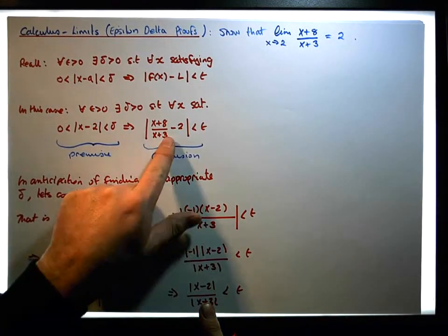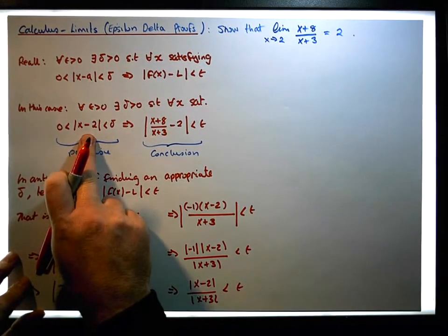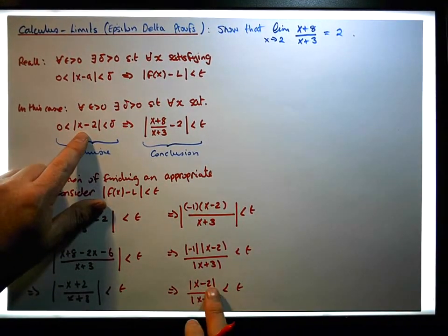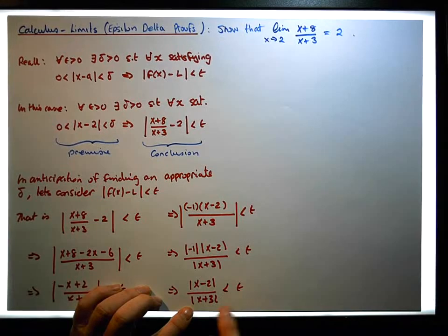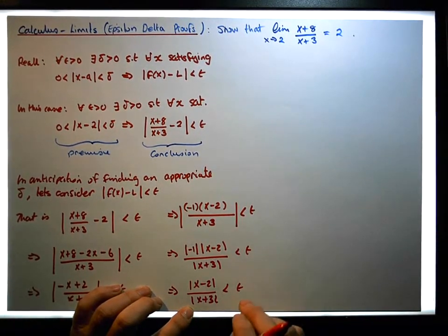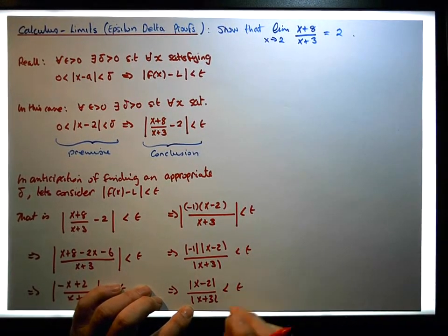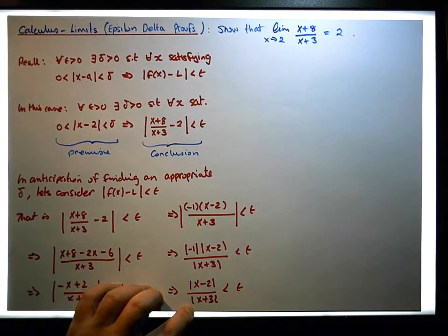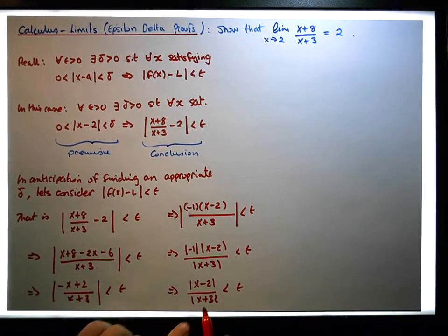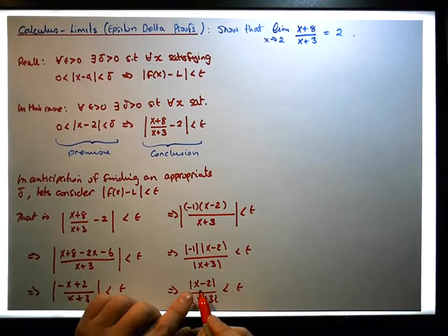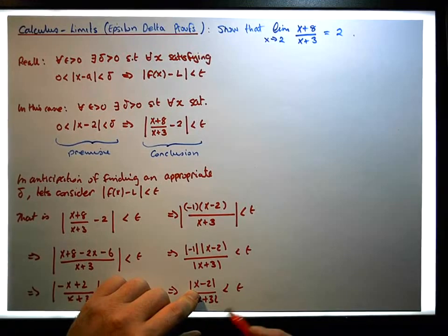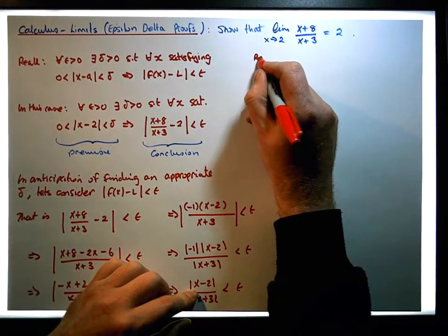So we've reduced our conclusion down to a situation where we have |x minus 2| divided by |x plus 3|. Technically we could say |x minus 2| is less than |x plus 3| times epsilon, but we want to find a delta just in terms of a positive real number or some multiple of epsilon. So we really need to know about the behavior of |x plus 3|. Let's consider what happens near x equals 2 in relation to this rational function, and let's restrict...